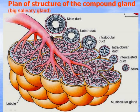The plan of structure of a compound gland — for example, a big salivary gland — looks like a tree during summer. The secretory portions look like leaves in the tree. Small ducts, like small branches, fuse into middle branches or ducts, which then fuse together into a main duct like the trunk of the tree.